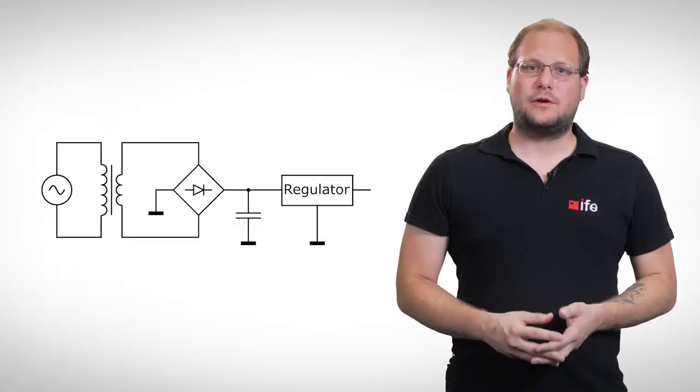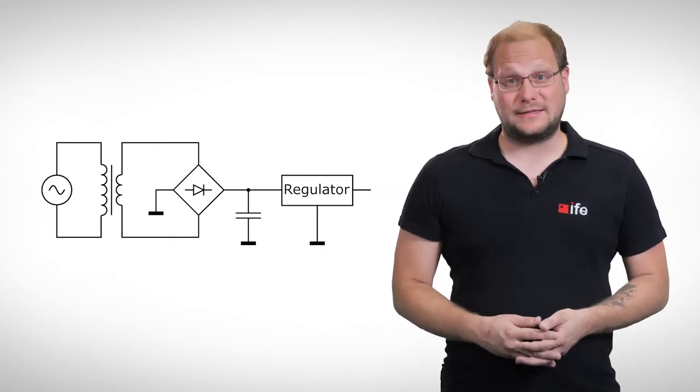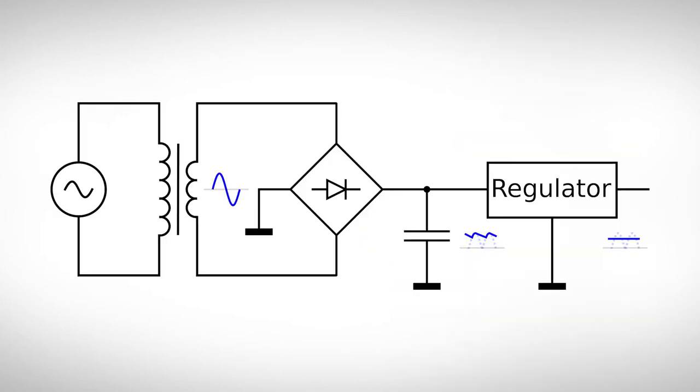Before we start with the regulator itself, let's have a quick look at the typical design of a linear power supply. If we are dealing with AC voltages from a power grid, typically there is a transformer at the beginning which converts the mains voltage into a lower AC voltage. The transformer also provides galvanic isolation, which can be very useful in some applications. Since the output of a transformer is always an AC voltage, it must be converted into a DC voltage by the following rectifier and filter capacitor. This can be done by a half-wave rectifier or a bridge rectifier.